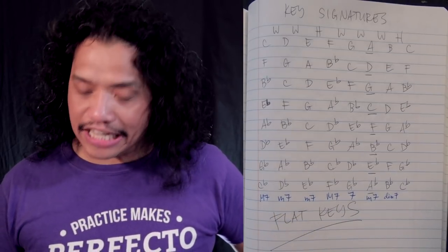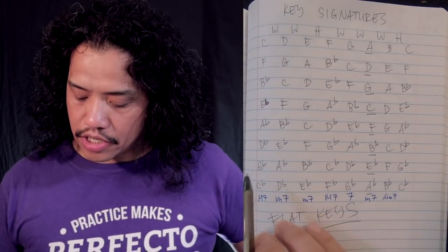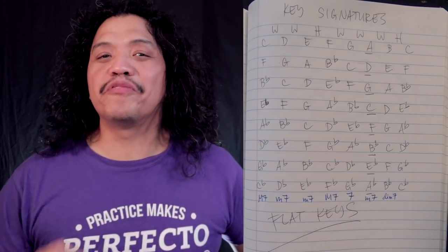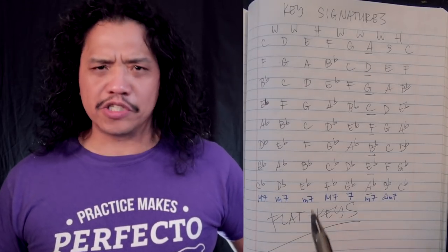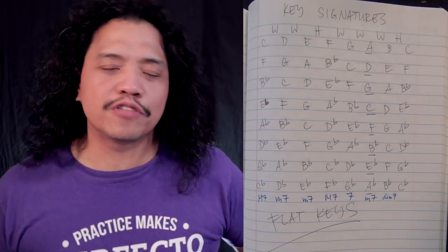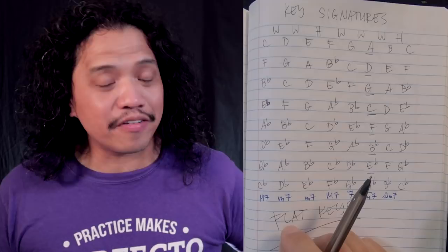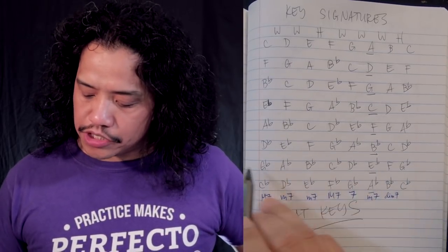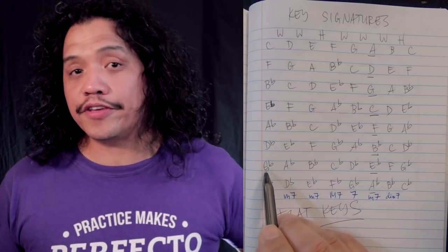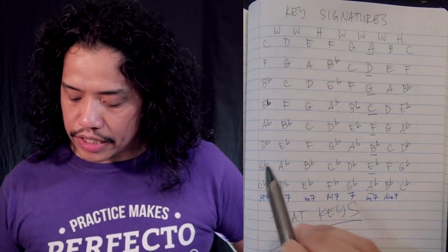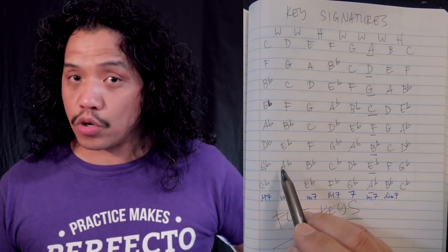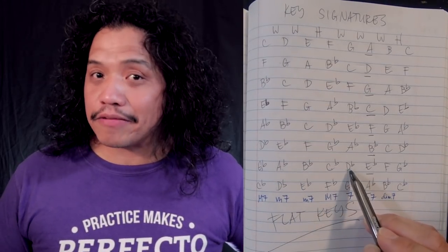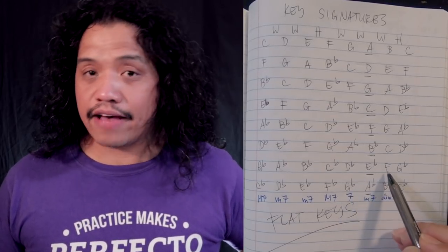Now let's pick a flat key — G♭ major. The notes of G♭ major are G♭, A♭, B♭, C♭, D♭, E♭, and F. Before you react violently saying there's no such thing as the C♭ note, click on the card above to watch my video on that for the full explanation. Taking the notes of the G♭ major scale and treating G♭ as our root gives you G♭ Ionian. Treating A♭ as our root gives you A♭ Dorian, which in turn also gives you B♭ Phrygian, C♭ Lydian, D♭ Mixolydian, E♭ Aeolian, and F Locrian.